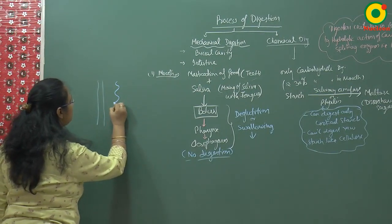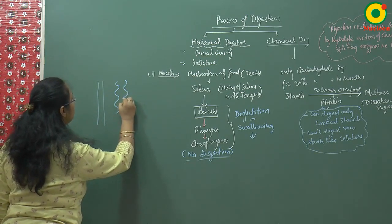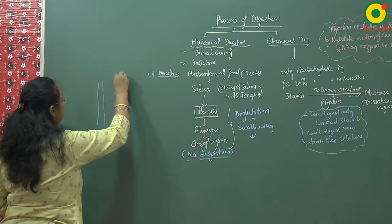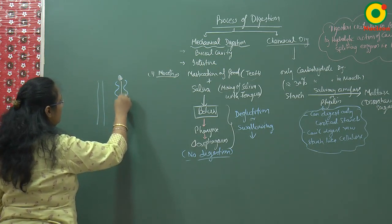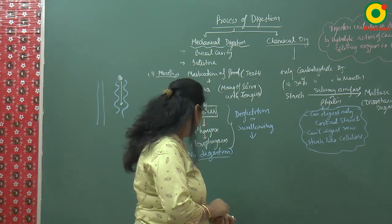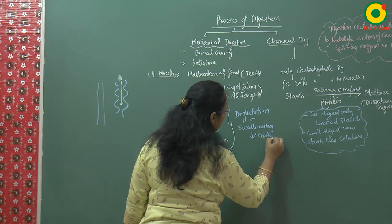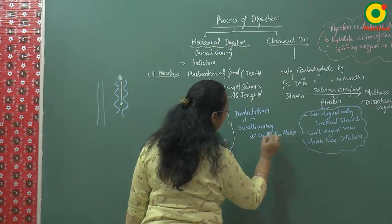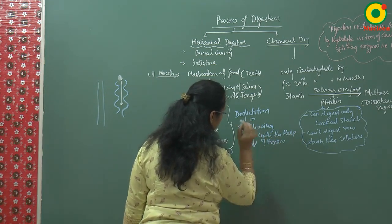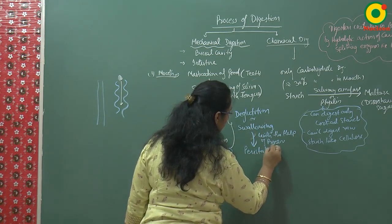There is contraction, expansion, contraction, expansion — in this manner you can observe contraction and expansion happening in the wall. With this, the food passes down from the esophagus to the stomach. So deglutition or swallowing takes place with the help of the process of peristalsis.